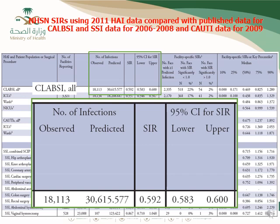Looking at this data — the 2011 HAI data compared to the baseline — the baseline for CLABSI and SSI was 2006–2008, and for CAUTI it was 2009. For CLABSI, there were 18,000 observed events and more than 30,000 expected based on the 2006–2008 baseline. The SIR is 0.59, which is almost 60% of the baseline rate — a big improvement representing almost a 40% reduction in CLABSI rate.